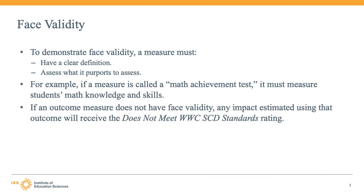First, let's examine the concept of face validity. An outcome measure must capture what it claims to measure for the study to appropriately label the intervention's effect on an outcome of interest. The WWC says that an outcome measure has face validity when it has a clear definition and captures what it claims to measure. When assessing face validity, the WWC requires alignment between the description of the measure and the content of the measure.